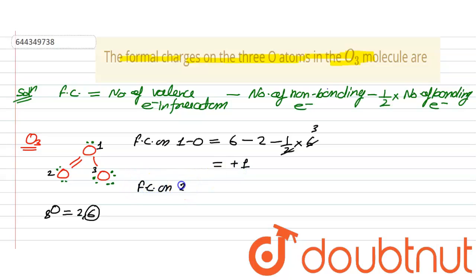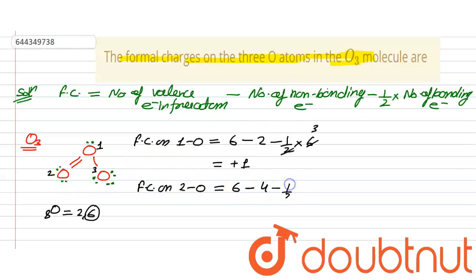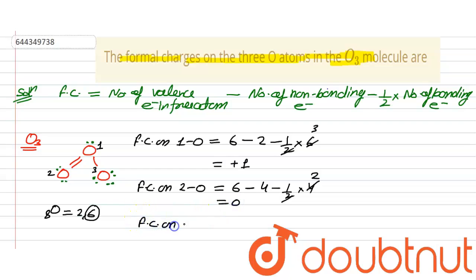For the second oxygen, the number of valence electrons is also 6. The non-bonding electrons are 4. There are two bonds, giving 4 bonding electrons. So: 6 − 4 − (½ × 4) = 6 − 4 − 2 = 0. The formal charge on the second oxygen is 0.